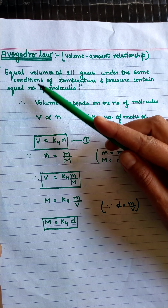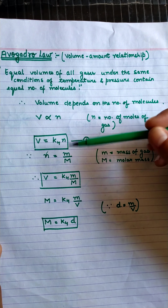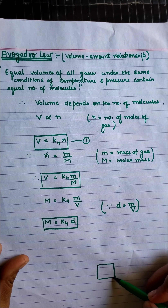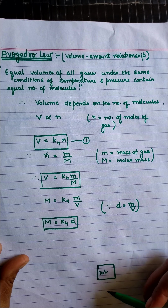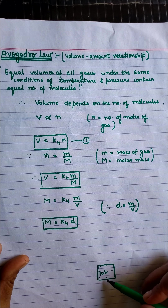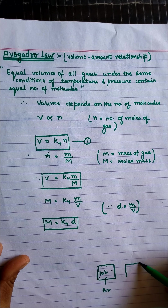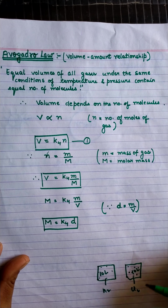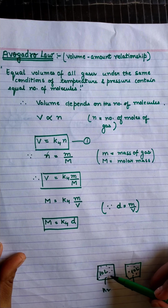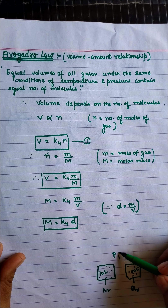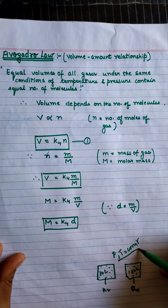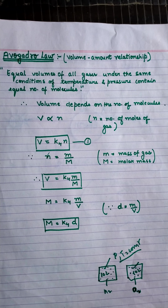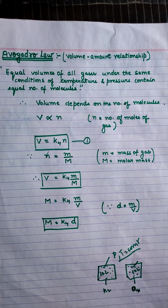If volume is also kept constant, it consists of the same number of molecules. For example, if we fill 10 liters with hydrogen gas and 10 liters with oxygen gas — these are equal volumes — and we keep pressure and temperature constant, then both gases will contain equal numbers of molecules and their amounts will also be equal.